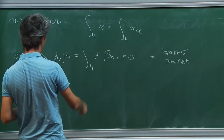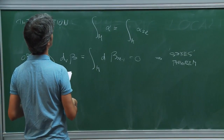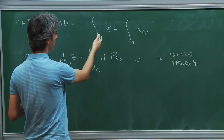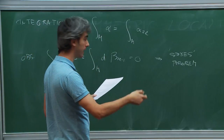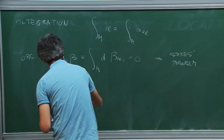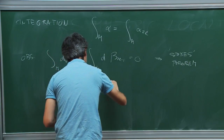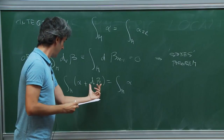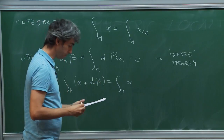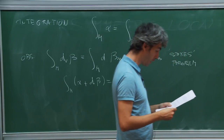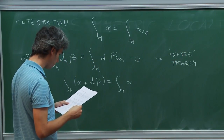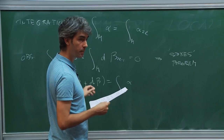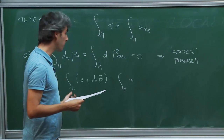In particular, the integral over M of an equivariantly closed polyform only depends on the cohomology class — it does not depend on the representative. Another way to put it: if we integrate alpha plus d_V beta over M, this equals the integral of just alpha. So only the equivariant cohomology class matters and not the particular representative. We are interested in computing integrals of equivariantly closed forms.